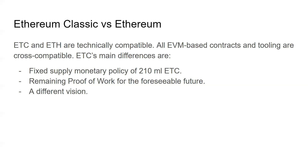ETC's main differences are a fixed monetary supply of 210 million ETC, adopted in 2017, where every 5 million blocks the block reward is reduced by one fifth. Also, Ethereum Classic is remaining proof of work for the foreseeable future, unlike Ethereum which is moving to proof of stake. On the Ethereum Classic side, many hold a Satoshi-type mindset — believing in proof of work, fixed monetary supply, and digital scarcity — leading to a different vision than Ethereum.